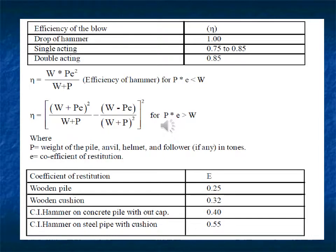Efficiency of the blow η: for a drop hammer η = 1.0; for a single-acting hammer η = 0.75 to 0.85; for a double-acting hammer η = 0.85. Efficiency can also be calculated as η = W·(e²) / (W + P), where P is the weight of the pile, anvil, helmet, and packing in tons, and e is the coefficient of restitution. Values of e: wooden pile with wooden cushion = 0.25; hammer on concrete pile = 0.32; cast iron hammer on concrete pile = 0.40; steel pile = 0.55.